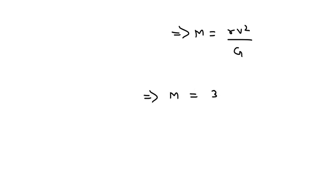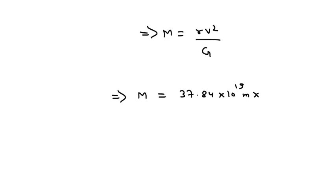I can write M equals 37.84 multiplication 10 to the power 19 meter multiplication 275.275 multiplication 10 to the power 3 whole square by 6.673 multiplication 10 to the power minus 11.